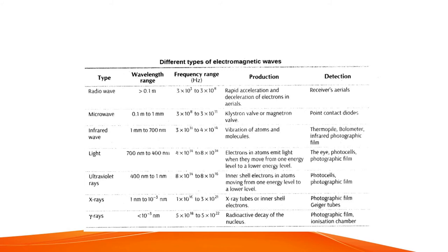Microwaves have wavelengths ranging from 0.1 meter to 1 millimeter, with corresponding frequencies from 3 × 10⁸ Hz to 3 × 10¹¹ Hz. They are produced in klystron valves or magnetron valves.